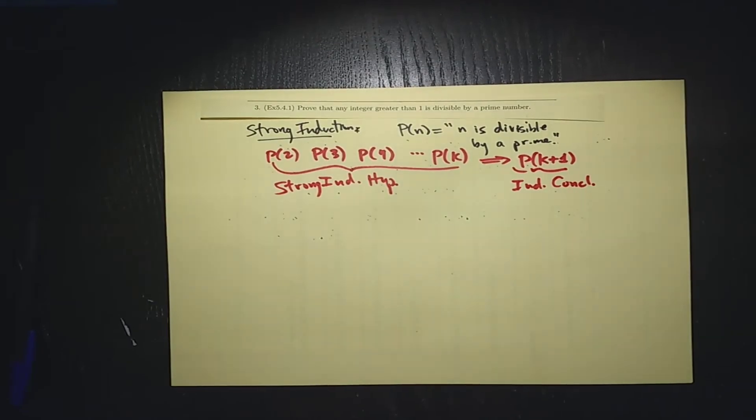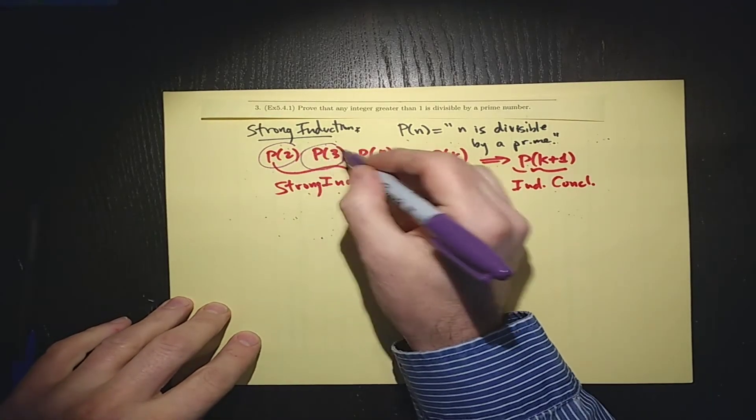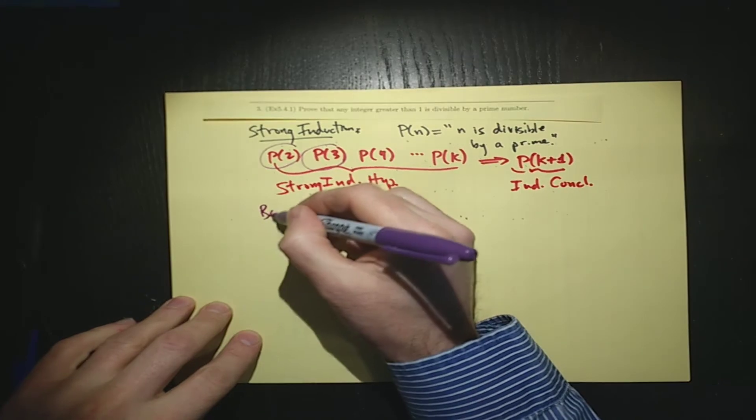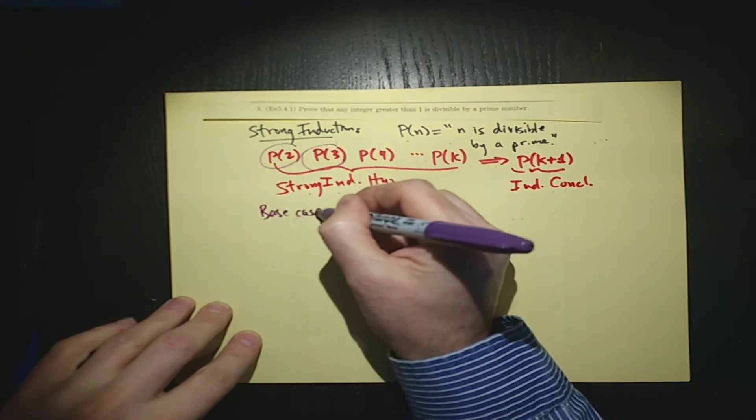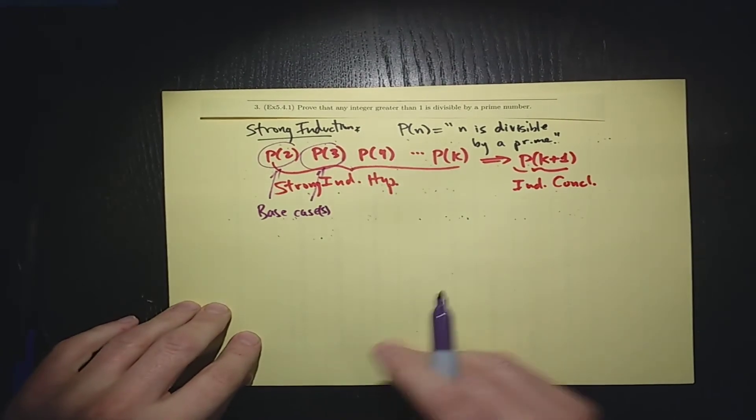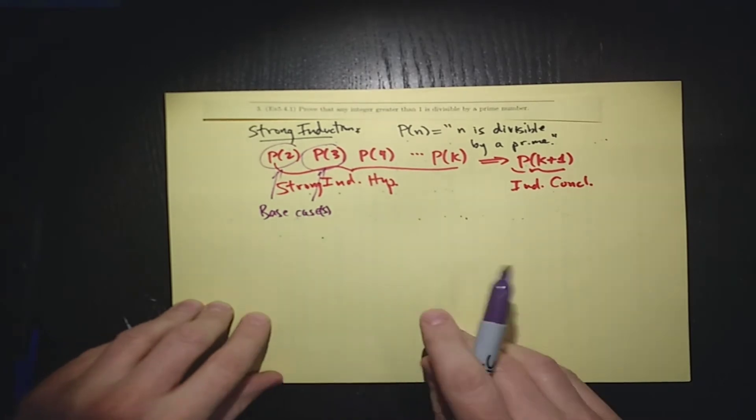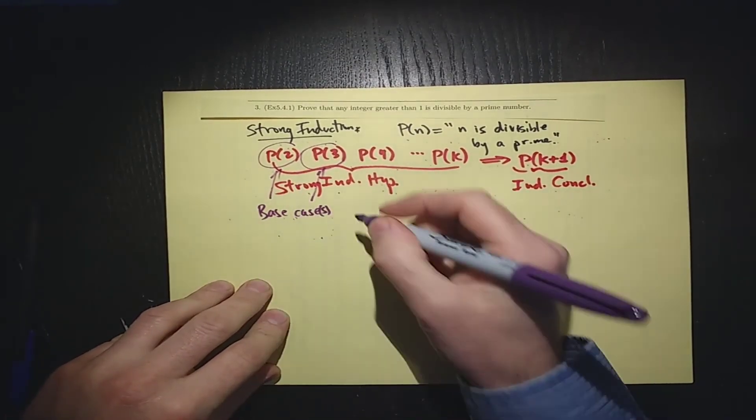But we're going to suppose, once we've done the base case, the base case, we could use this as a base case, or maybe these two base cases. If we have a P(2) and P(3), notice that it should be n greater than 1, so we don't want P(1), we want to start with P(2). So those are the base cases.